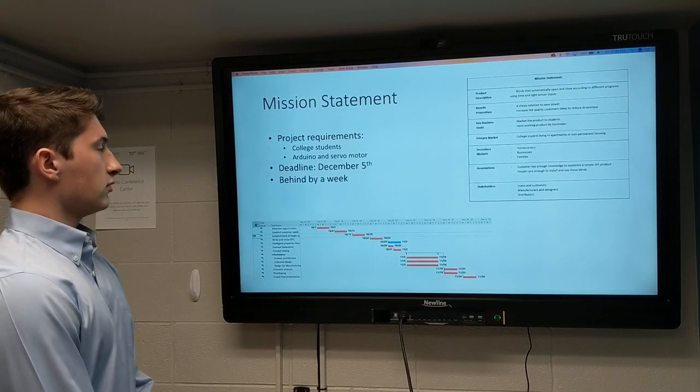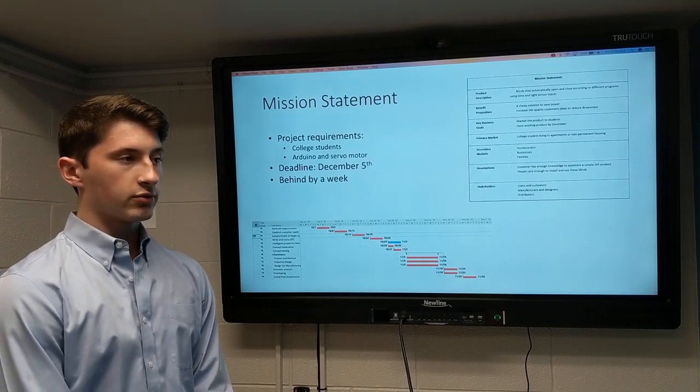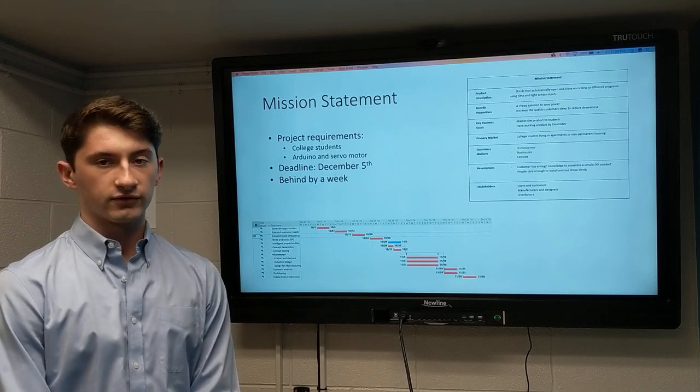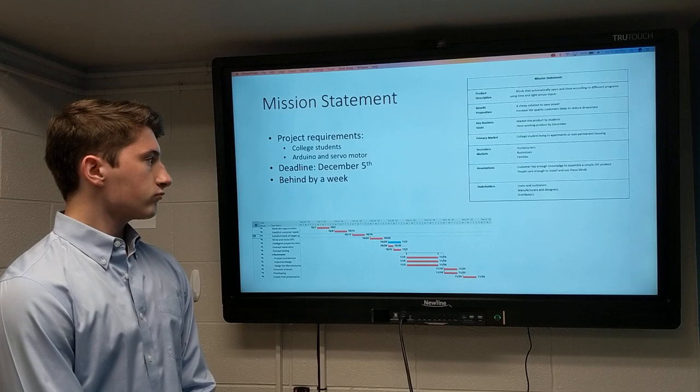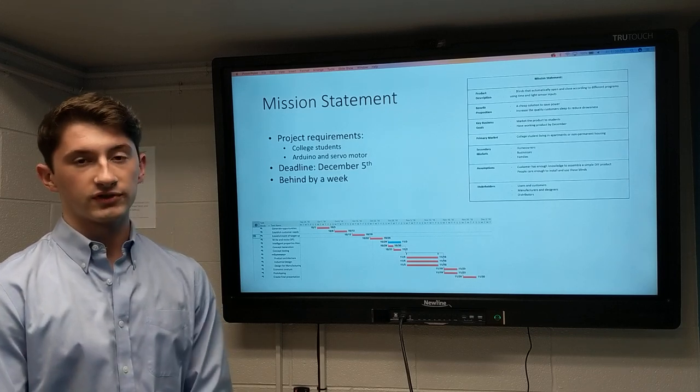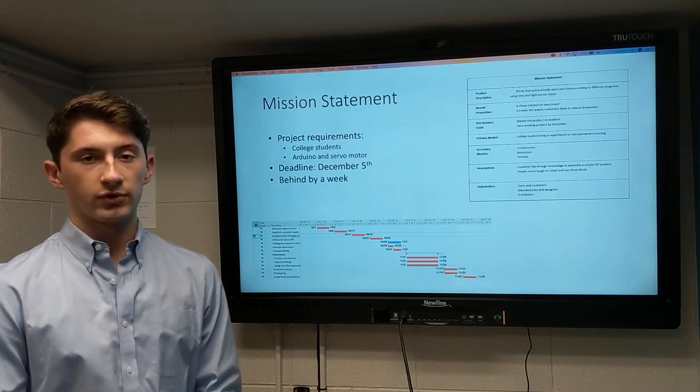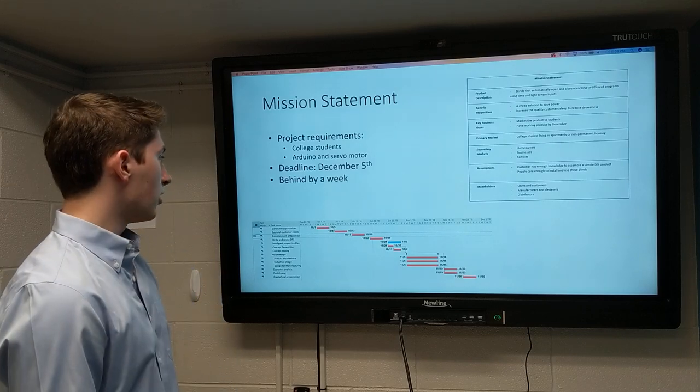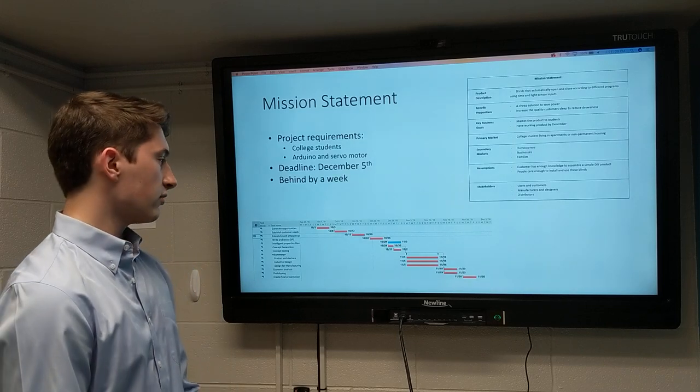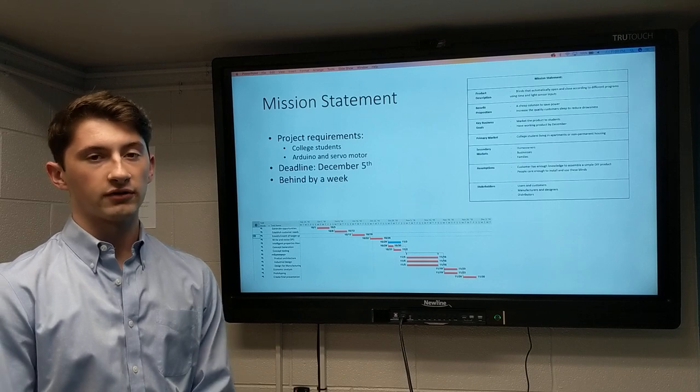Our mission statement: this project for VTABS required us to make a product that we could sell to college students that incorporates an Arduino and a servo motor. Our key business goals are to market a product towards college students and to have it incorporate that type of technology. The deadline is December 5th, which is coming up really fast. Currently, based on our original Gantt chart that we made, we're about a week, a week and a half off where we should be.